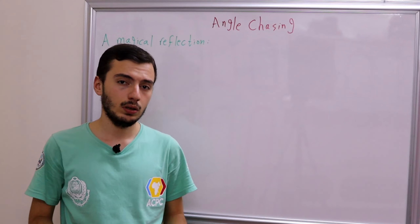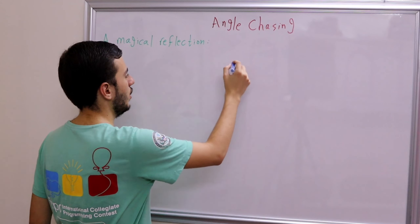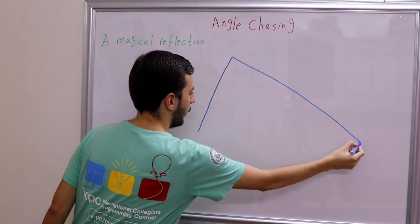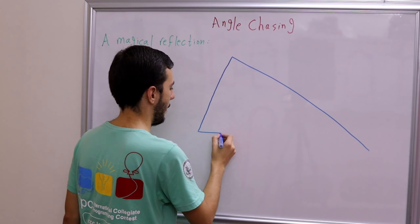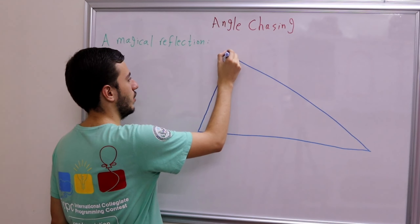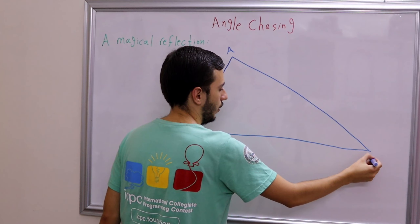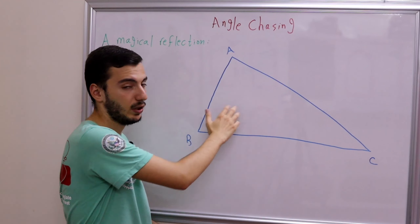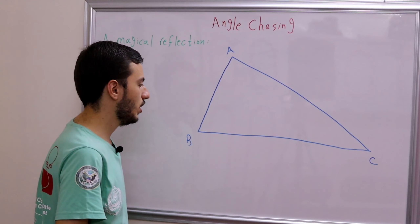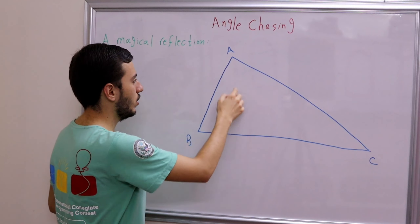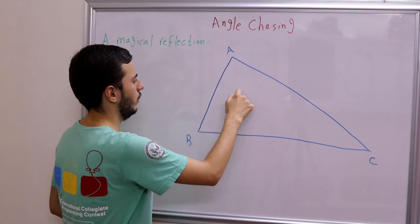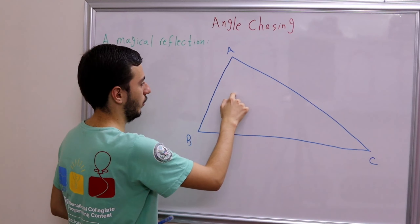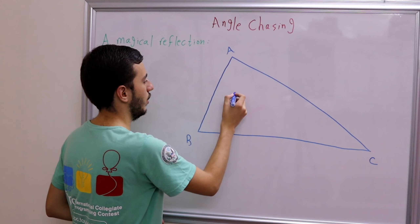We'll start by drawing a simple triangle ABC. The orthocenter is the concurrency point of the three altitudes. So let's say we have an altitude here and another altitude here. They should meet somewhere here. So let's say this is the orthocenter H.